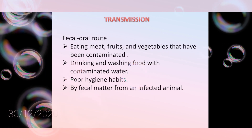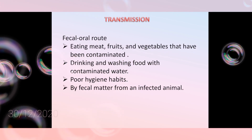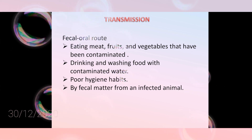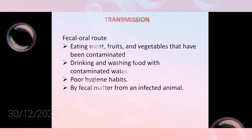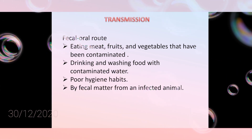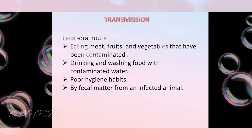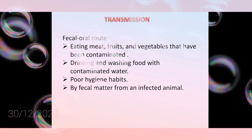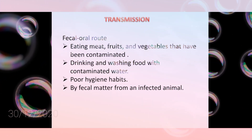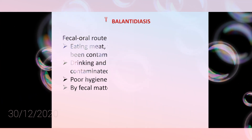Transmission occurs via the fecal-oral route: eating meat, fruit, and vegetables contaminated with cysts; drinking or washing food with contaminated water; poor hygienic habits; and contact with fecal matter from an infected animal.